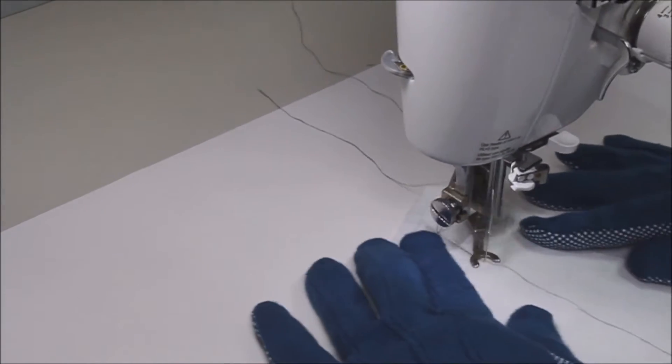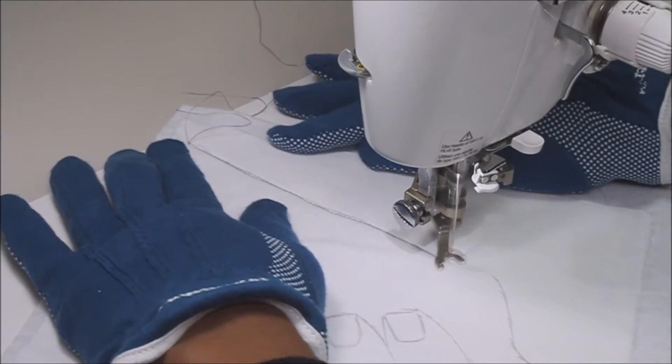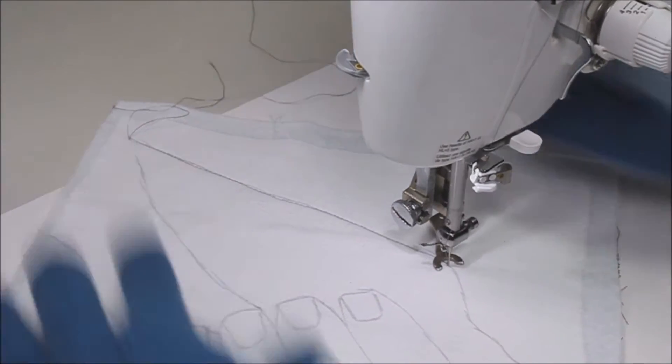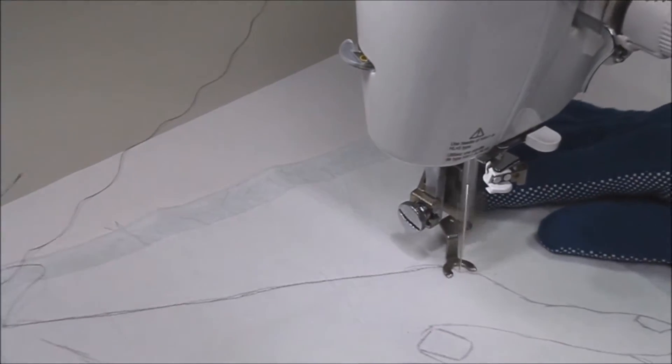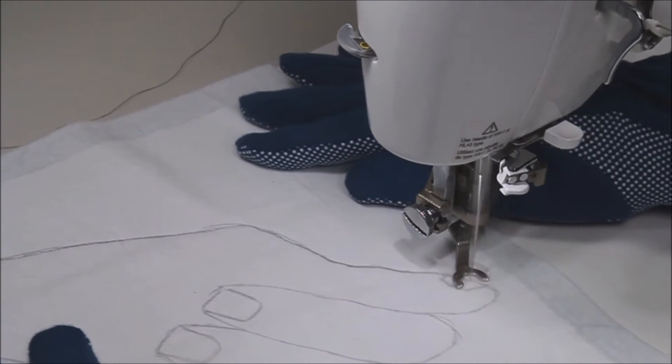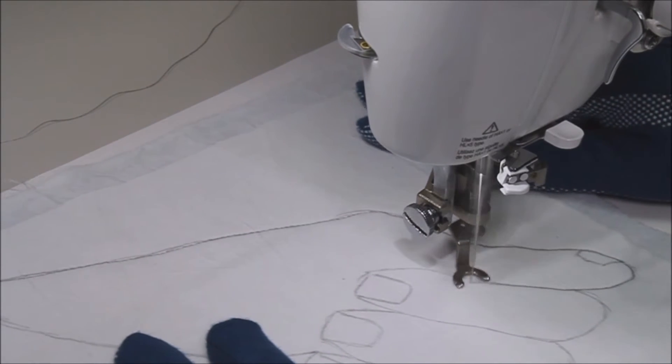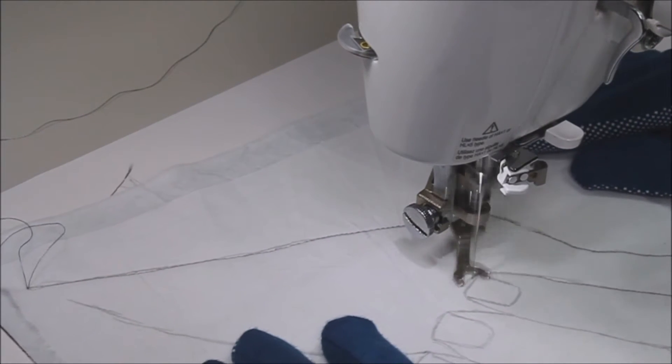Now I'm going to outline the lines of the pencil using my sewing machine and thread. I chose to use white fabric because I wanted to imitate a white sheet of paper. The color of thread was a little bit tricky in choosing because I wanted to imitate a pencil.